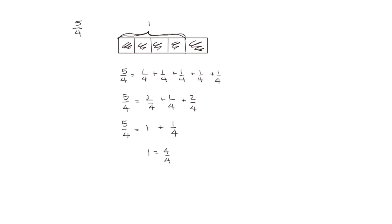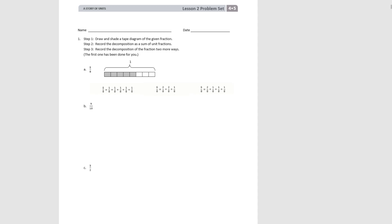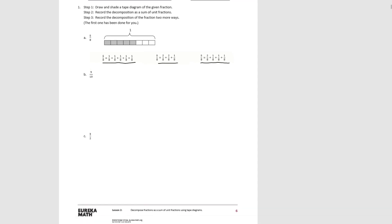Let's use this to work some problems in our problem set. Number 1 says to draw and shade a tape diagram of the given fraction, then record the decomposition as a sum of unit fractions, and then record the decomposition of the fraction in 2 more ways. The first one's been done — the fraction we're showing is 5 eighths. The tape diagram is drawn, divided into 8 pieces, with 5 of them shaded. The first equation shows it broken into unit fractions, and then there are 2 other ways it could be broken down. These are not the only 2 ways — there's a variety of different ways, but we just have to choose 2.